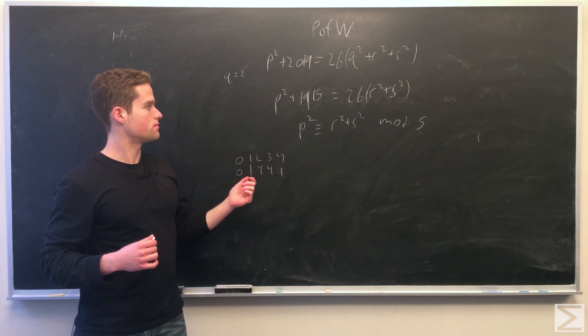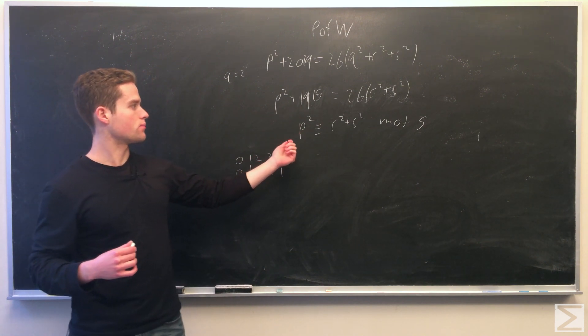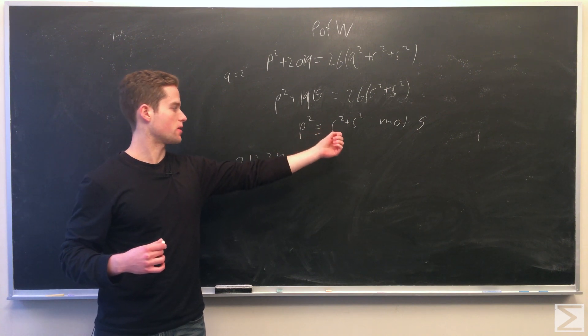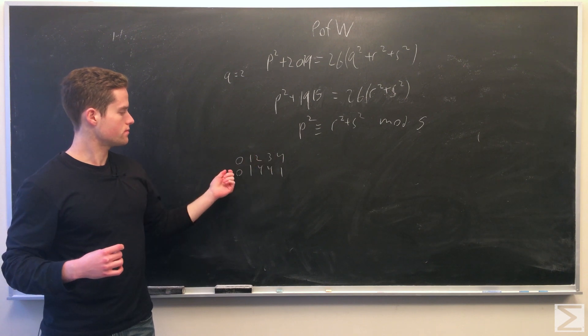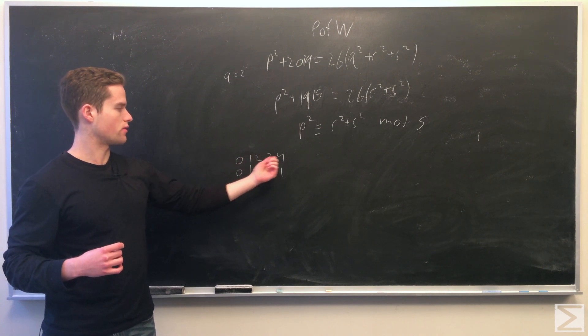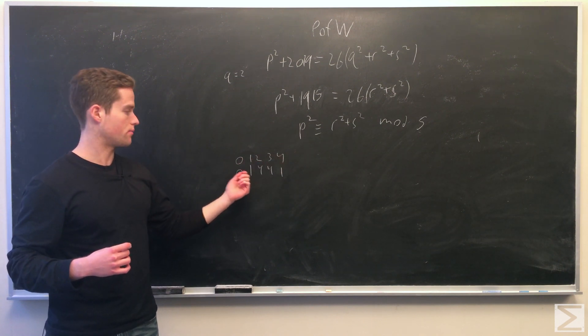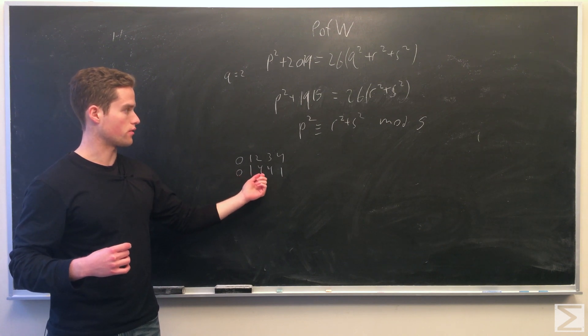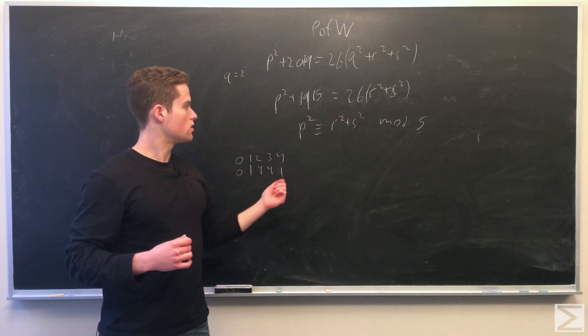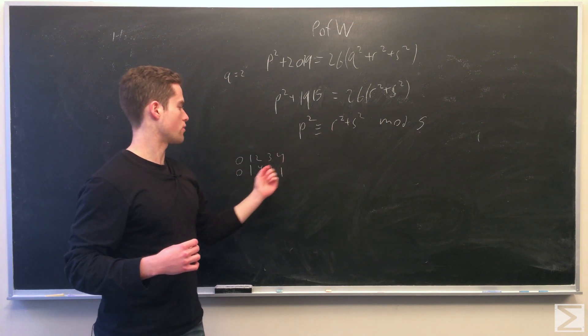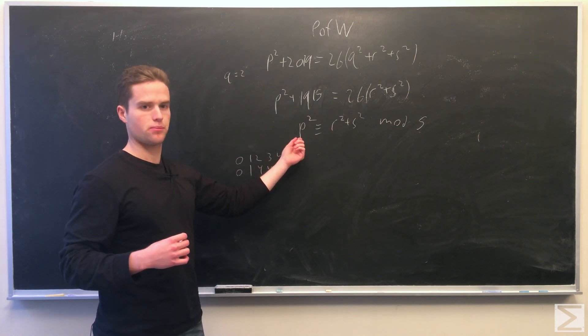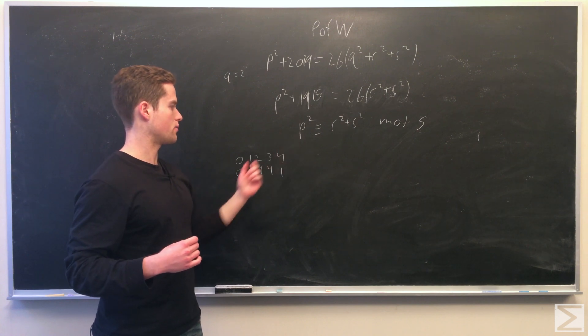We get p squared congruent to r squared plus s squared mod five. Writing out 0, 1, 2, 3, 4 mod five, look at the squares. We have possible squares of 0, 1, or 4. We can't have r and s both equal to 4, both equal to 1. We'd get p squared congruent to 2 or 3 mod 5, which is impossible.